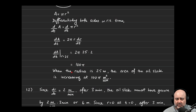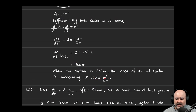To interpret this result, we write: when the radius is 25 meters, the area of the oil slick is increasing — increasing indicated by the positive number — at 100π meters squared per minute. Unit analysis tells us this is a rate of change of area with respect to time: square units per time.